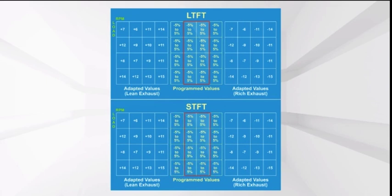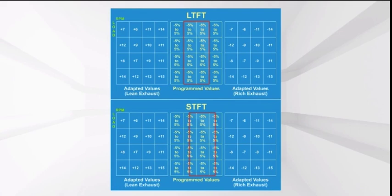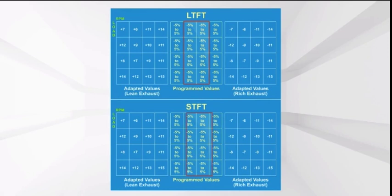Keep in mind that the adaptive control limits for fuel trim vary among PCM manufacturers. For example, on some PCM controllers the LTFT may have control within a range of minus 35 percent to plus 35 percent, while on another PCM controller the LTFT will operate within a range of only minus 23 percent to plus 16 percent.